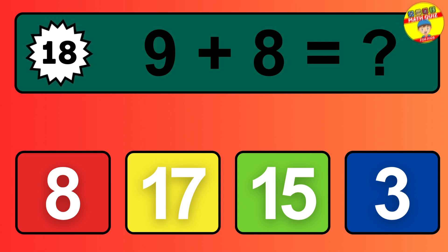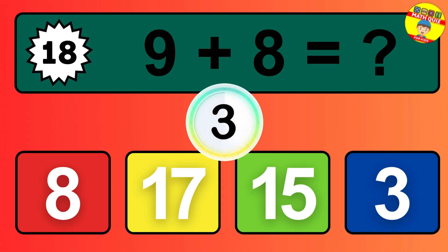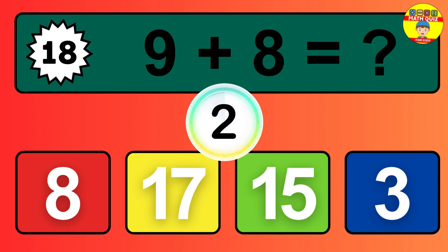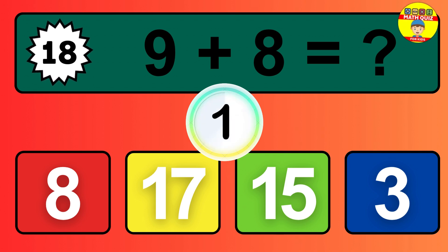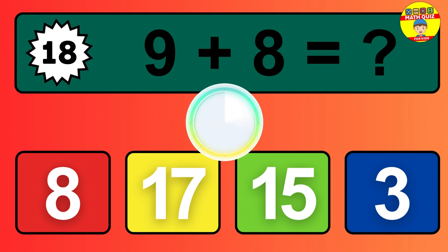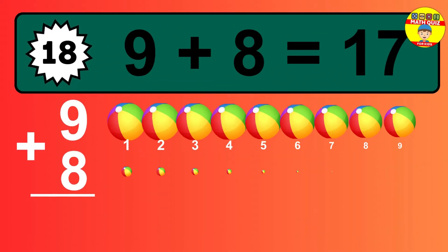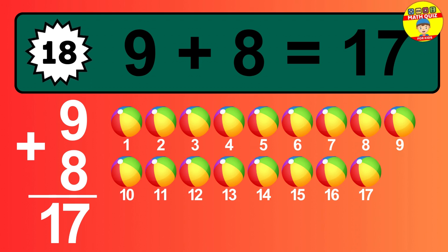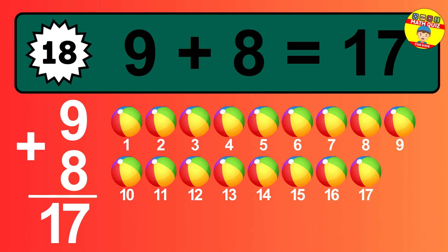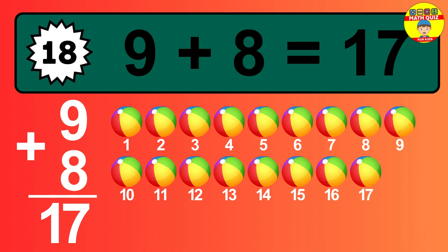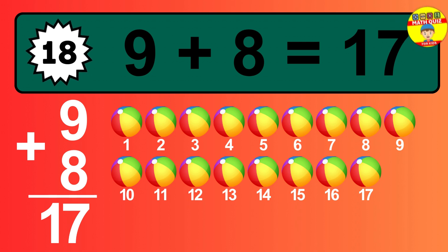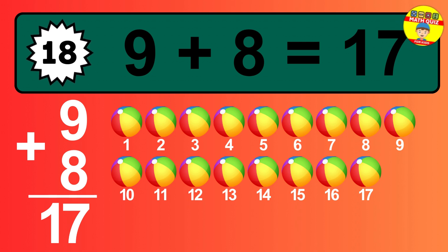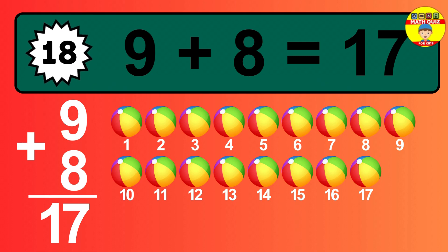Question 18. 9 plus 8 equals what? The answer is 9 plus 8 is 17. Let's count it. 1, 2, 3, 4, 5, 6, 7, 8, 9, 10, 11, 12, 13, 14, 15, 16, 17.